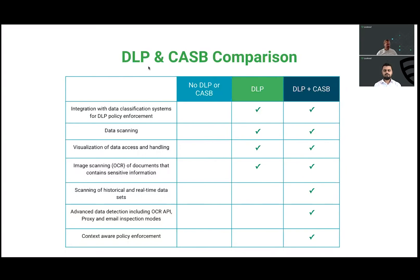You also need scanning of historical data and real-time data sets. Historical data is what already exists before you introduce CASB and DLP protection. Real-time data is created after — on uploading, downloading, or creating new datasets. If there are any upcoming questions, we're always happy to support you and explain further.